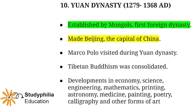The Yuan dynasty is one of the most important dynasties of China because it was the first dynasty established by foreigners — the Mongols. The Mongols were the first to make Beijing the capital of China. Marco Polo visited China during the Yuan dynasty. Tibetan Buddhism was consolidated, and this era saw developments in economy, science, engineering, mathematics, printing, astronomy, medicine, painting, poetry, calligraphy, and other forms of art.